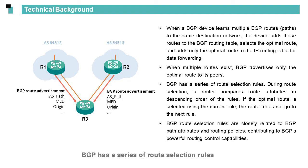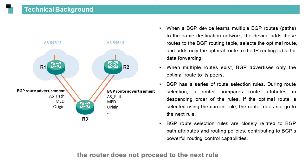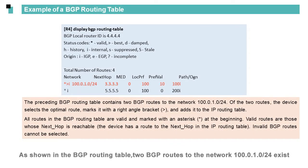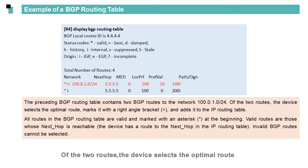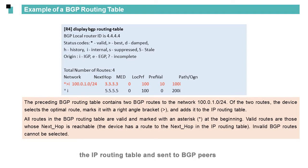BGP has a series of route selection rules. During route selection, a router compares route attributes in descending order of the rules. If the optimal route is selected using the current rule, the router does not proceed to the next rule. As shown in the BGP routing table, two BGP routes to the network 100.0.1.0/24 exist. After comparing two routes, the device selects the optimal route, marking it with a right-angle bracket. There is always only one optimal route to a network, and only the optimal route can be added to the IP routing table and sent to BGP peers.